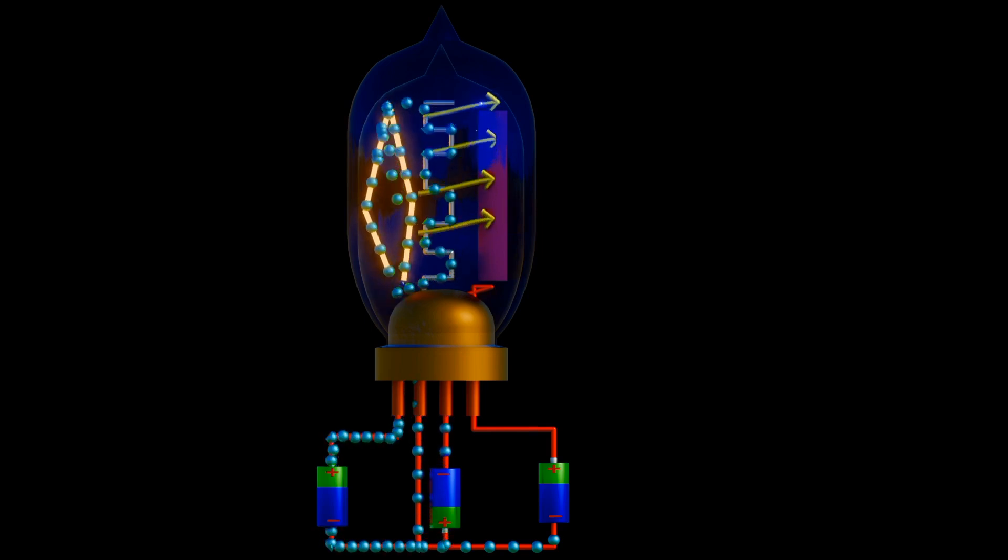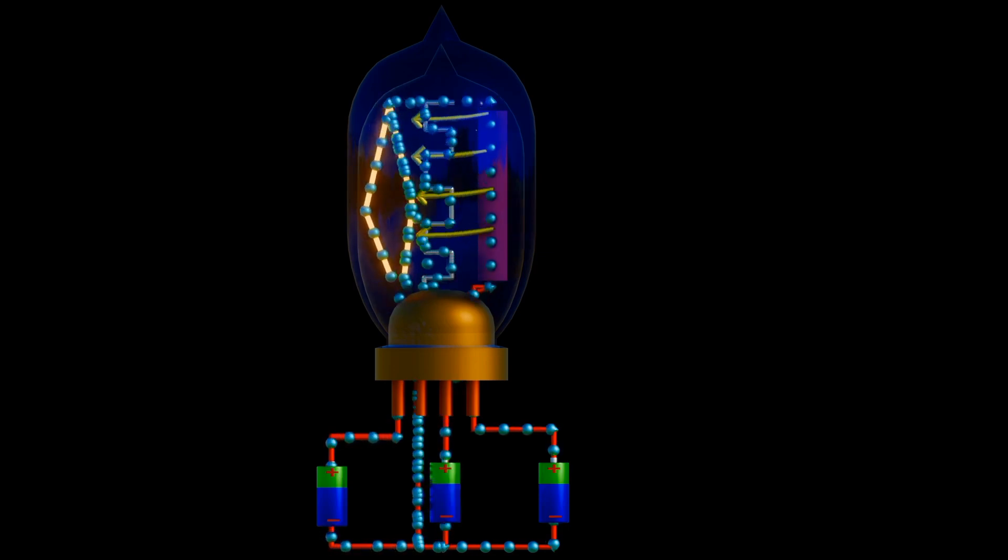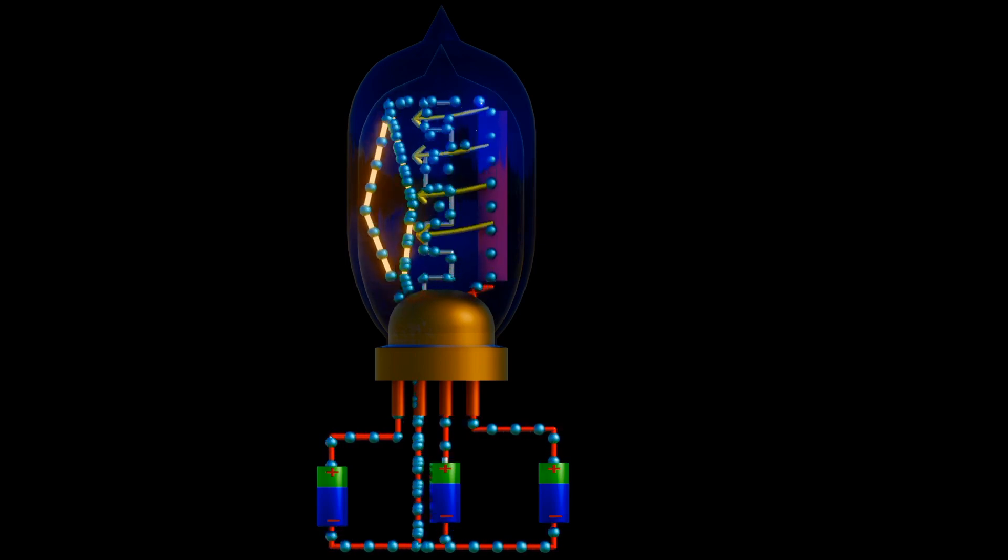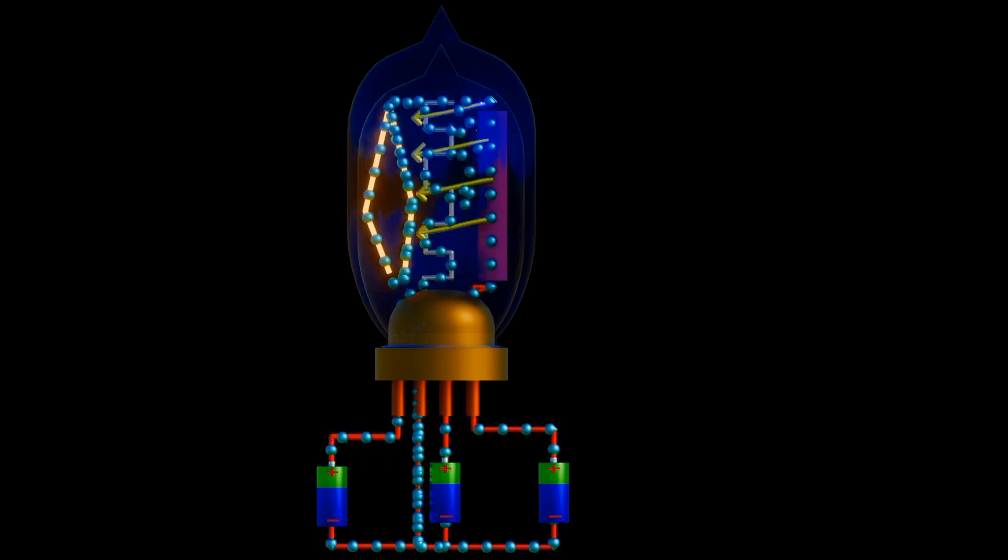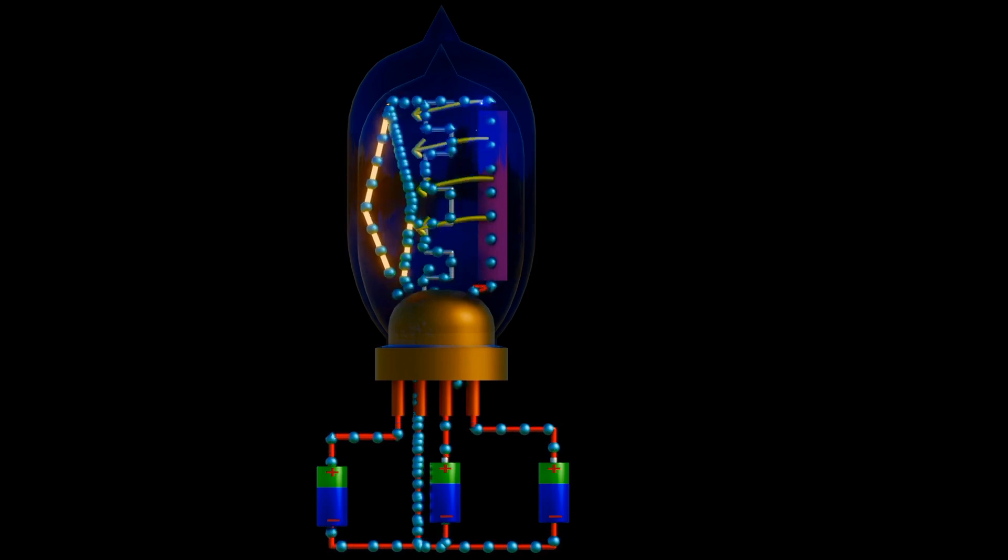With these, we can control the flow of current in the circuit. Tube characteristics in circuits. When the grid of the tube is sufficiently negative that essentially no current flows, we call the conviction cutoff. Conversely, when the grid is sufficiently positive at zero volts or even slightly positive with respect to the cathode, then there is no restriction on the flow of current due to the grid. This condition is called saturation.